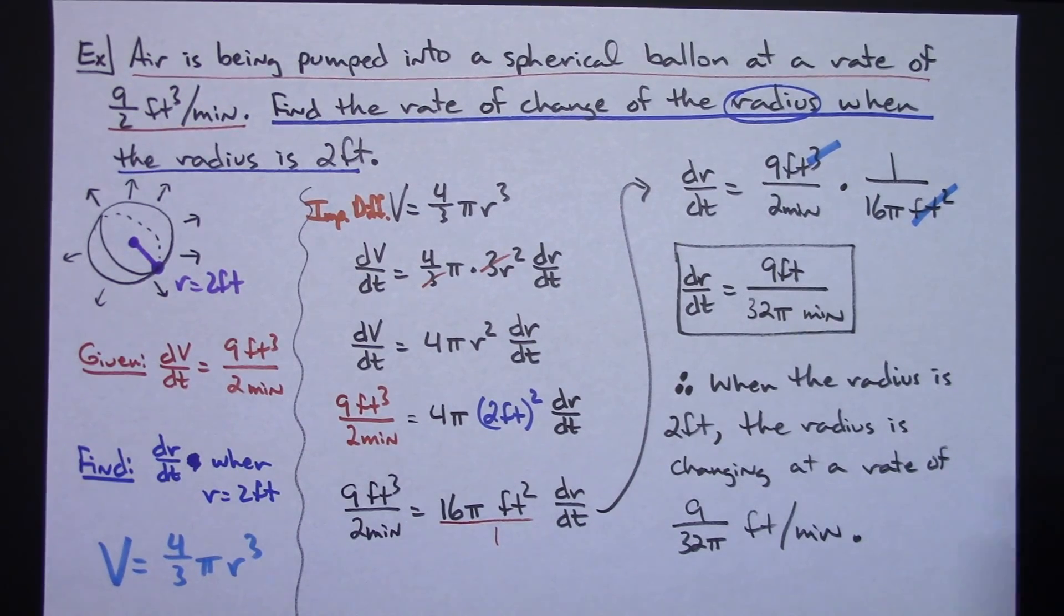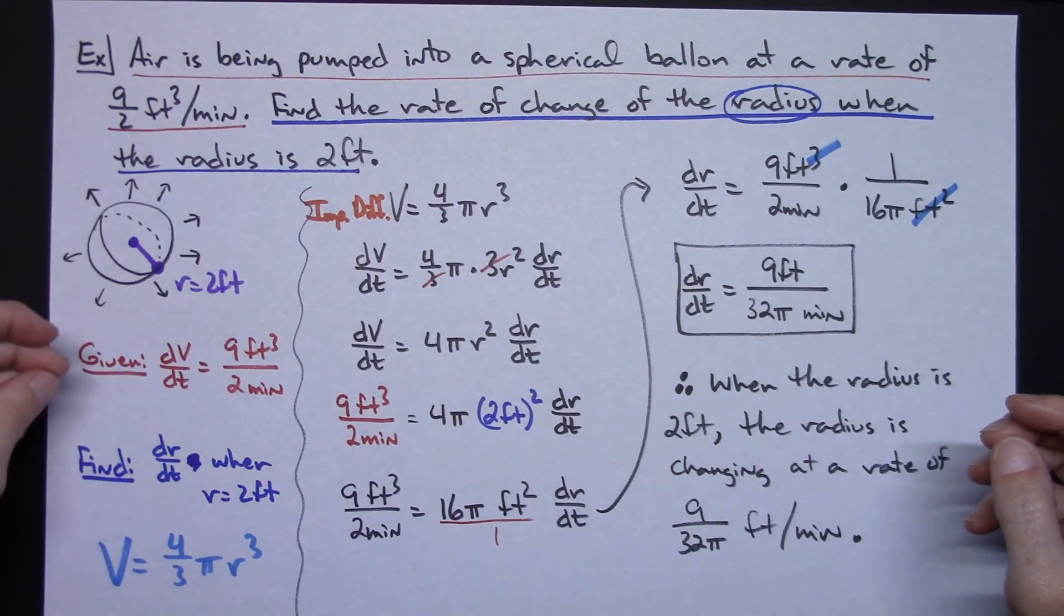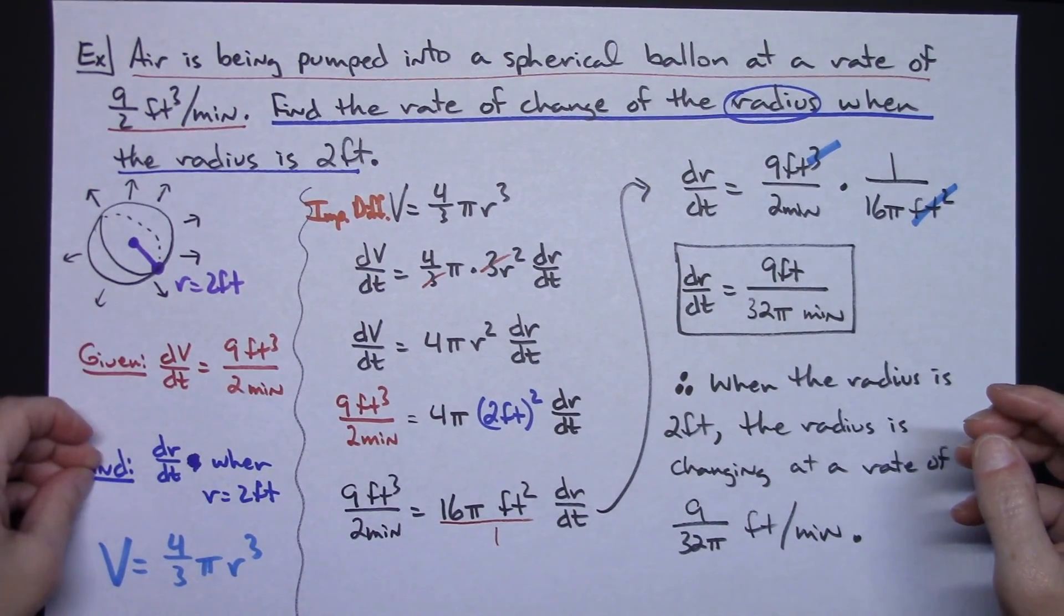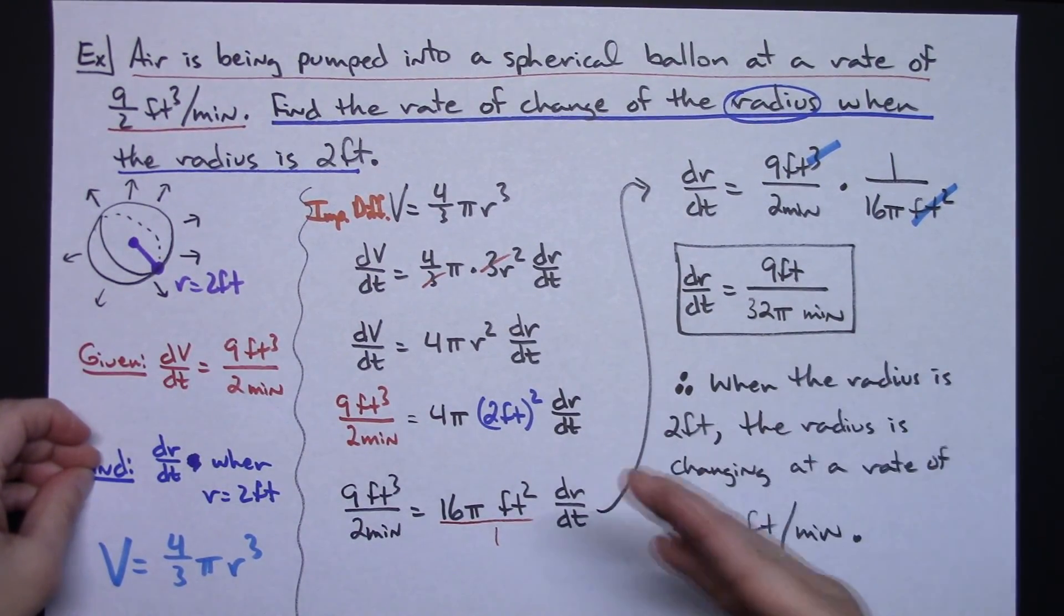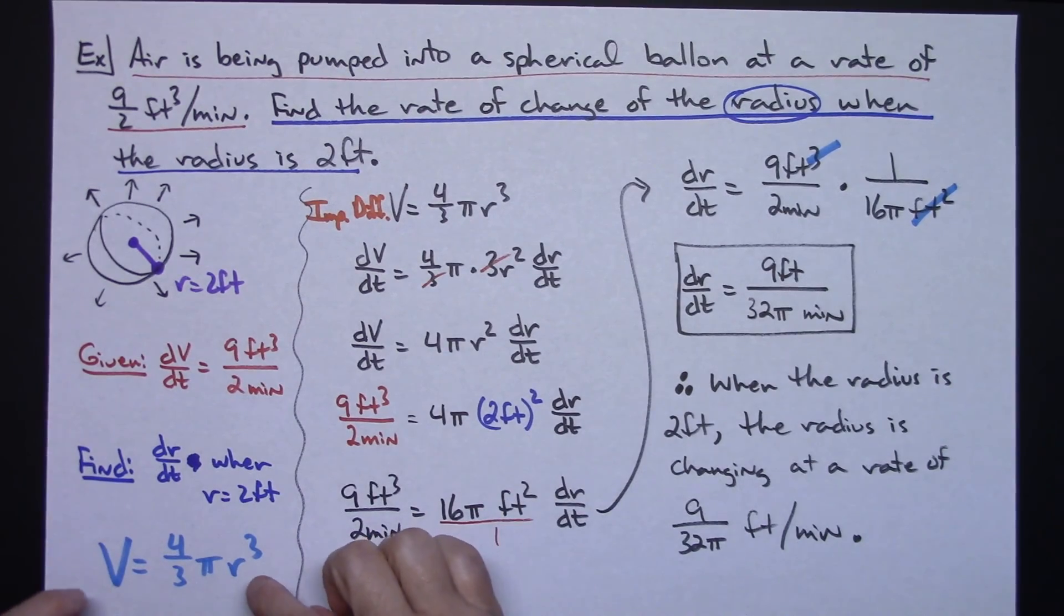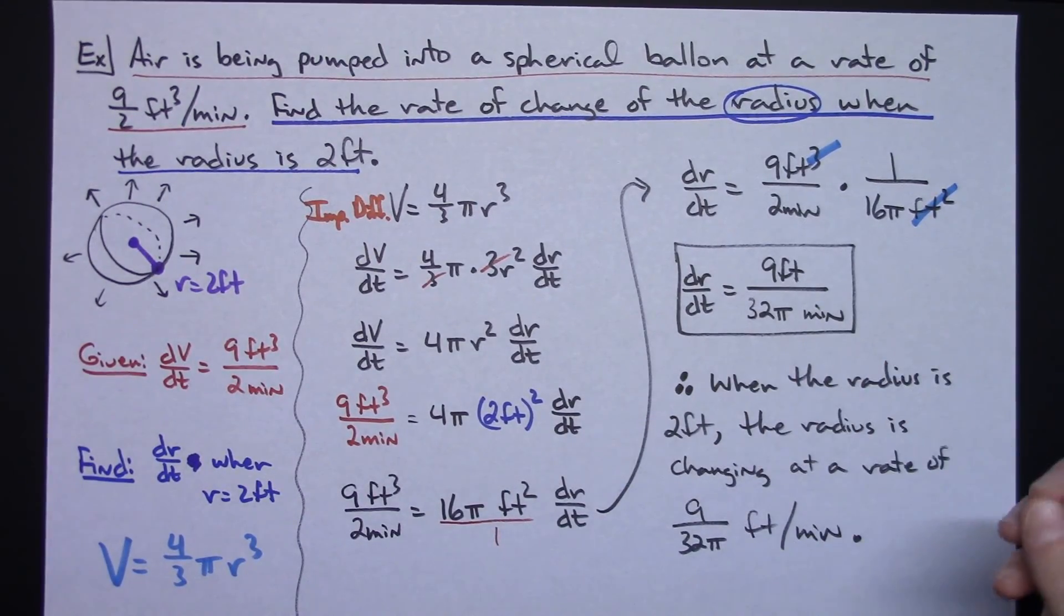So, just one nice little example there of a related rates problem with a nice little strategy. Always try to draw some type of picture. It's going to help you visualize what's going on. Find your given, find your find, what it's asking you to find in the story problem. Come up with the geometric formula that you're going to use. And like I said, most of these are always going to be a common one, so it might not be a bad idea to go back and memorize and re-familiarize yourself with all those geometric formulas that you learned back in geometry.